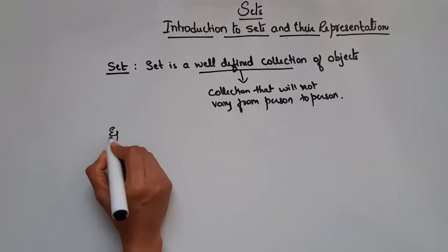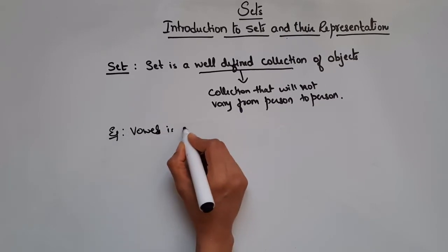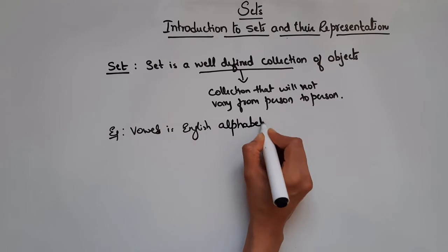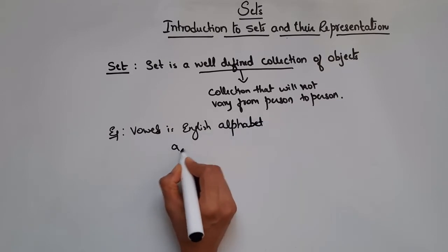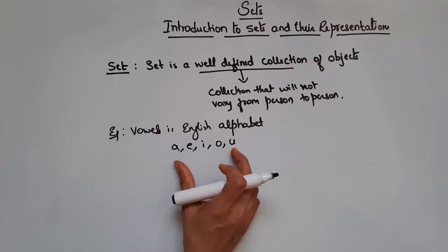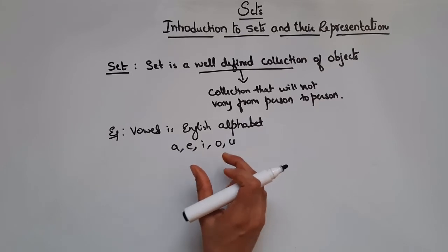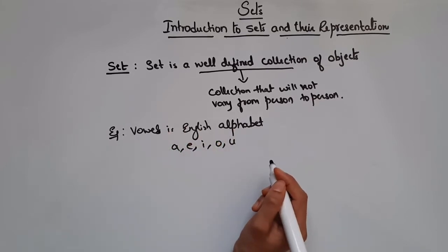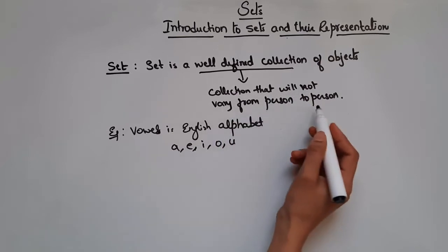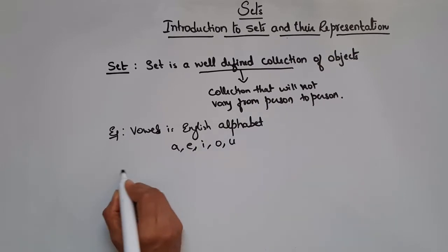For example, if I say what are the vowels in the English alphabet — we all know the vowels are A, E, I, O, U. So this collection will not vary from person to person. If I ask any person what are the vowels in the English alphabet, the collection will remain the same: A, E, I, O, U. Therefore, we can say it is a well-defined collection.